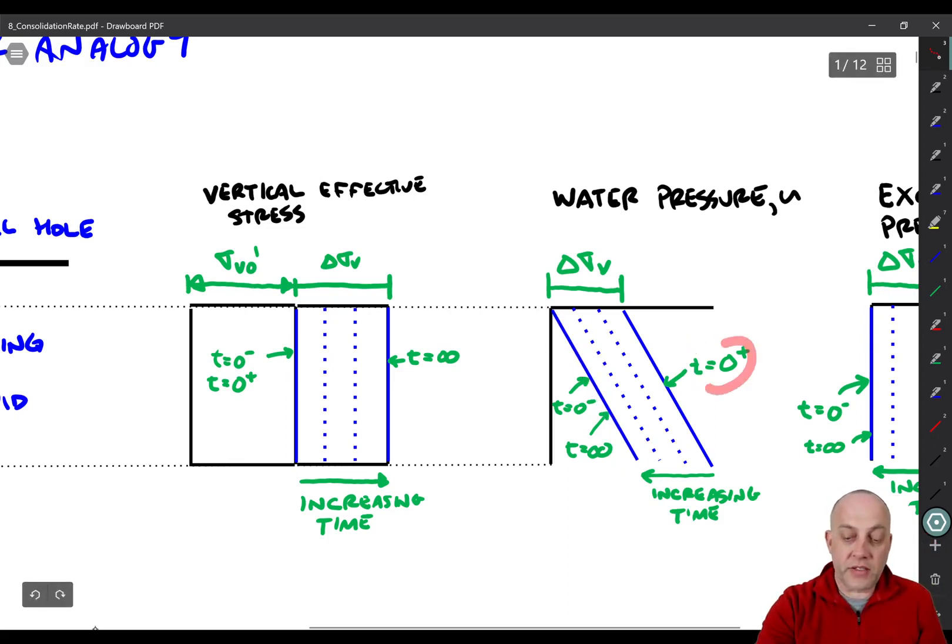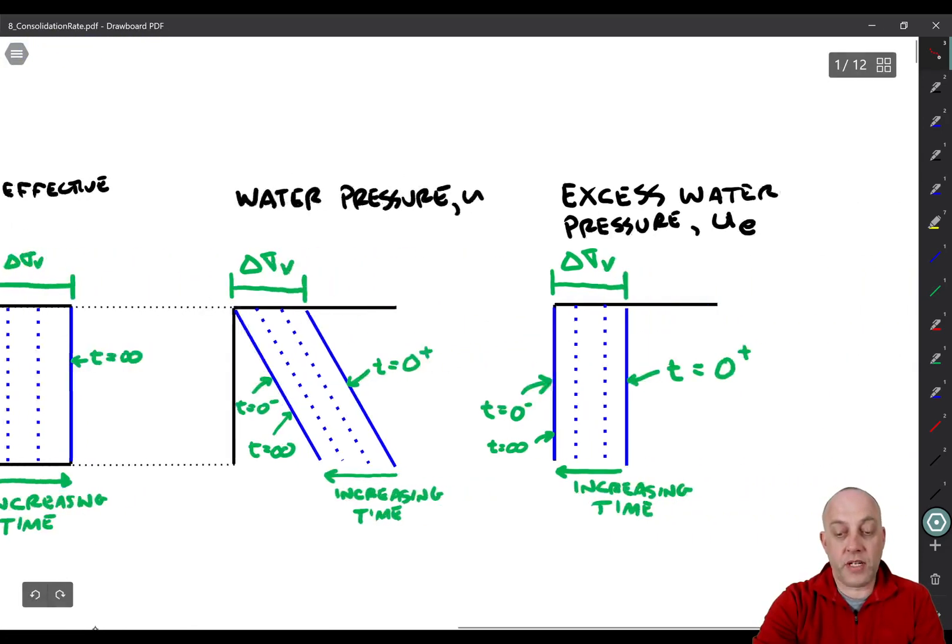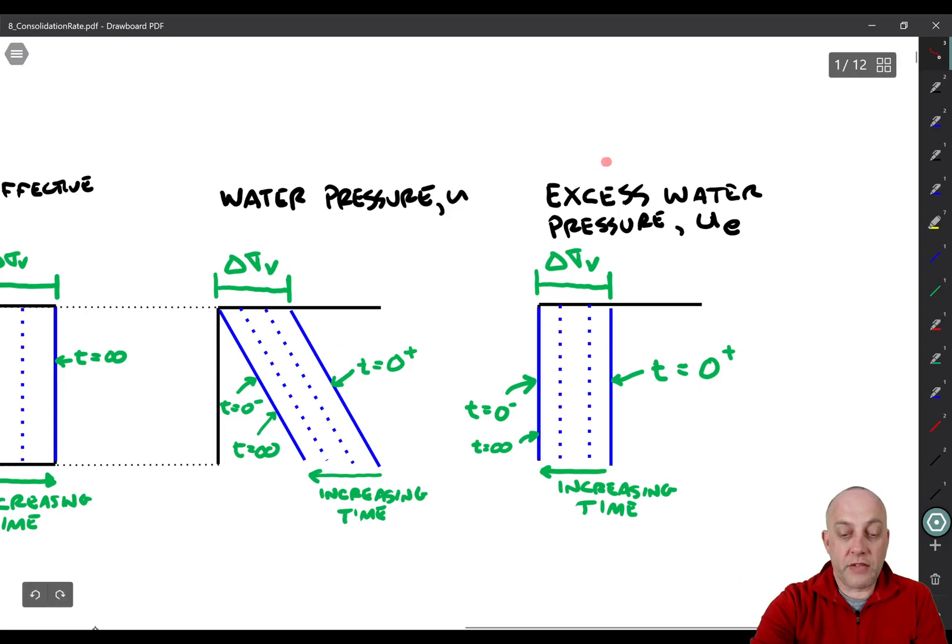So T equals zero plus as we have here, T equals infinity is back again with T equals zero minus. Alright, now one thing that we'll do is we're going to subtract out the hydrostatic component of the water pressure and deal only with excess water pressure. So here we have UE, that's excess water pressure, and that's just equal to, I suppose I should define it here, UE is equal to U minus UH, where UH is hydrostatic.